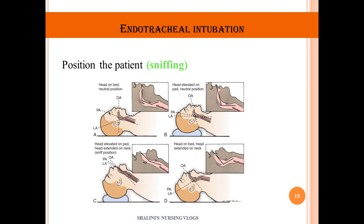The patient is placed in the sniffing position. There are three axes: oral axis (OA), pharyngeal axis (PA), and laryngeal axis (LA). When an intubation pillow is placed under the occiput, the pharyngeal and laryngeal axes converge. Extending the neck further aligns the oral, pharyngeal, and laryngeal axes into a straight line, making intubation easier. Without the pillow, just extending the neck does not achieve this alignment.